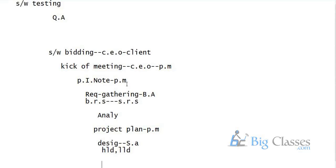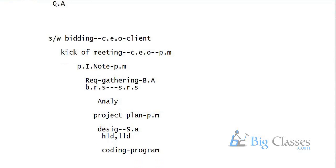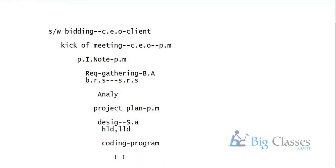Once design is completed, the next step is coding. Coding is done by programmers. Based on the LLD — which contains algorithms — programmers start coding. Once coding is completed, testing engineers start testing on the application. Testing is done by quality assurance category people.